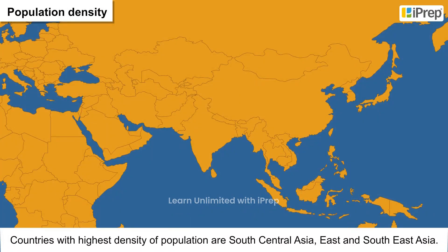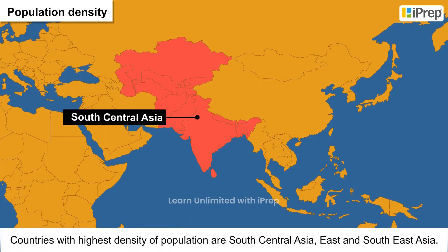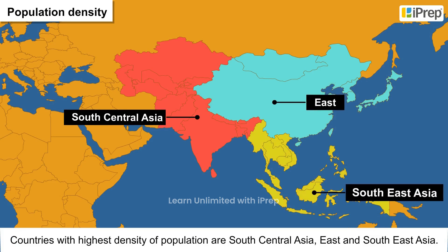Countries with the highest density of population are South Central Asia, East and Southeast Asia.